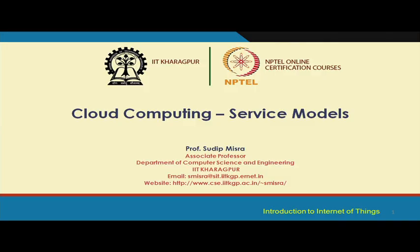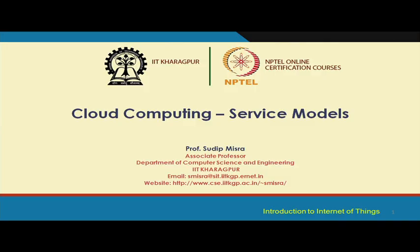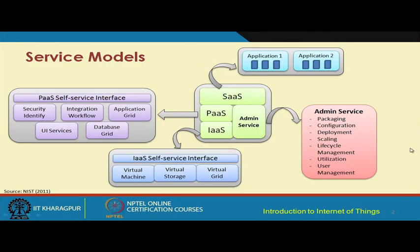The next lecture in the series on cloud computing for Internet of Things is on service models. In the previous lecture we briefly went through the different types of service models. There are three core service models that have been popular since the inception of cloud computing: the first is Software as a Service, the second is Platform as a Service, and the third is Infrastructure as a Service.